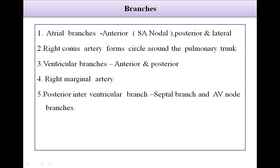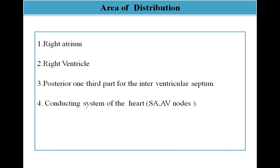Branches of the right coronary artery are: atrial branches, right conus artery, ventricular branches, right marginal artery, and the posterior interventricular branch. One of the anterior branches goes to the SA node. The right conus artery forms a circle around the pulmonary trunk. The posterior interventricular branch gives septal branches and a nodal branch. The right coronary artery supplies the right atrium, right ventricle, posterior one-third of the interventricular septum, and the conducting system including the SA and AV nodes.